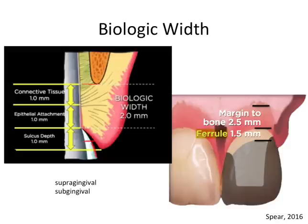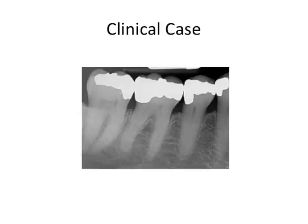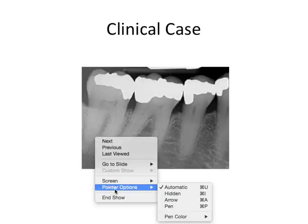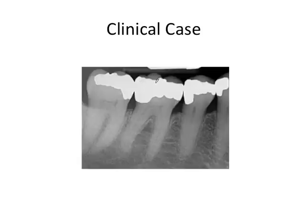Now let's apply this to a clinical case to help illustrate all these concepts. Say on molar number 30 we need to replace this restoration with a crown because there is extensive decay underneath. This is a situation when we need to consider both ferrule and biologic width. Say we remove this old restoration and we effectively have this much natural tooth structure remaining hypothetically.